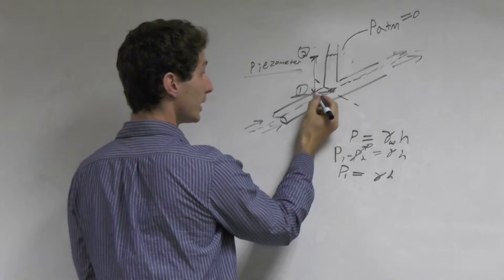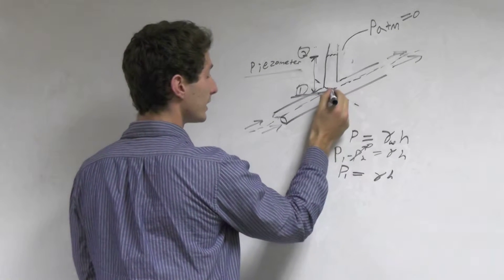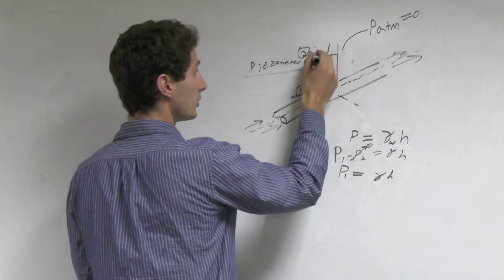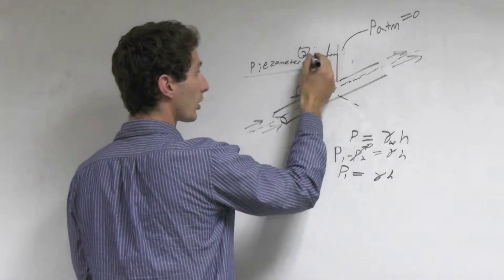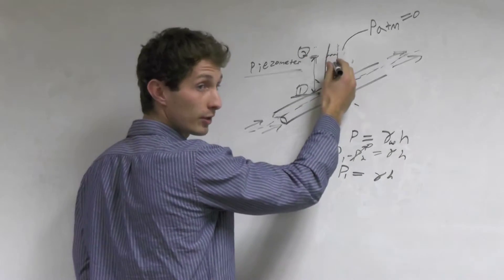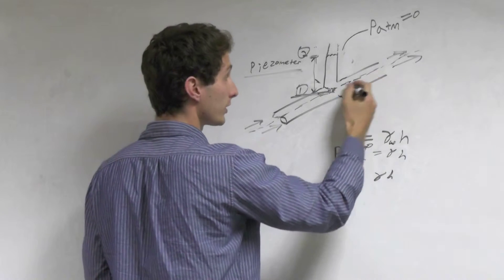The piezometer uses the change in height from the center of the pipe to the water that rises from the pressure of the water moving through the pipe.